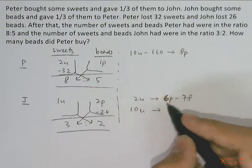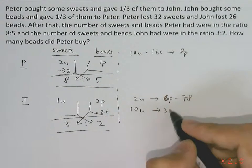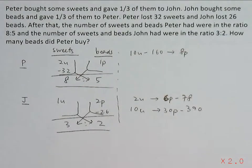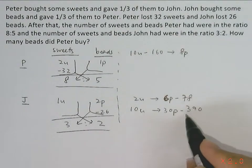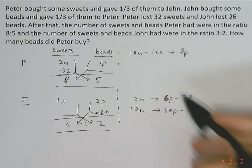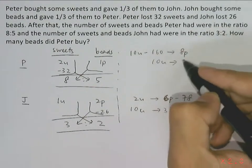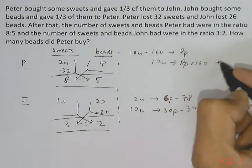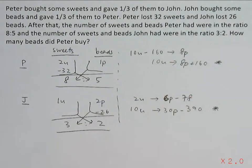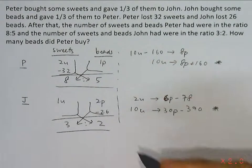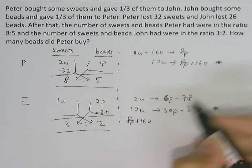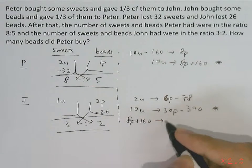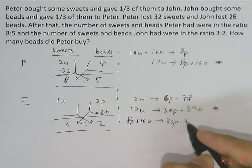Multiplying through by 5: 6 parts becomes 30 parts, and 78 becomes 390. So 10 units equals 30 parts minus 390. We also know 10 units equals 8 parts plus 160. Setting these equal: 8 parts plus 160 equals 30 parts minus 390.